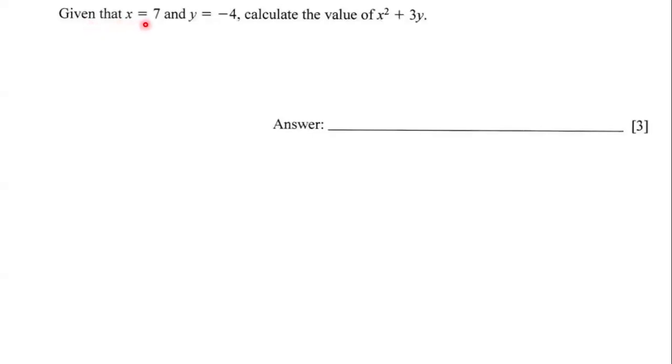Given that x equals 7 and y is equal to negative 4, calculate the value of x squared plus 3y. In order to do this, what we're going to do is substitute.